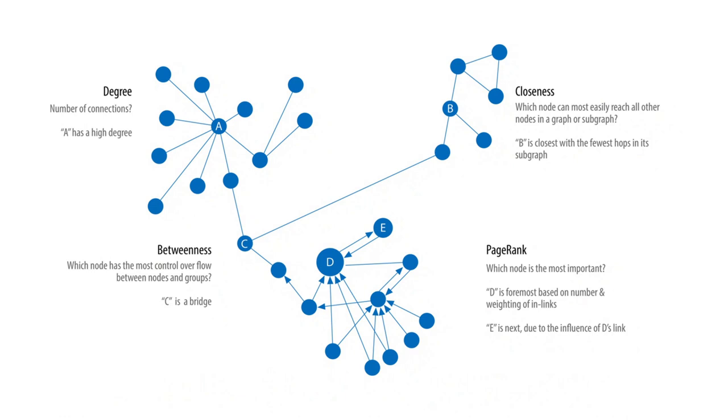Centrality algorithms are used to work out what are the important nodes in a graph, and there are lots of different ways of determining importance. It could be based on the number of connections in degree centrality, or perhaps which node is the most easily reachable within a graph or subgraph.